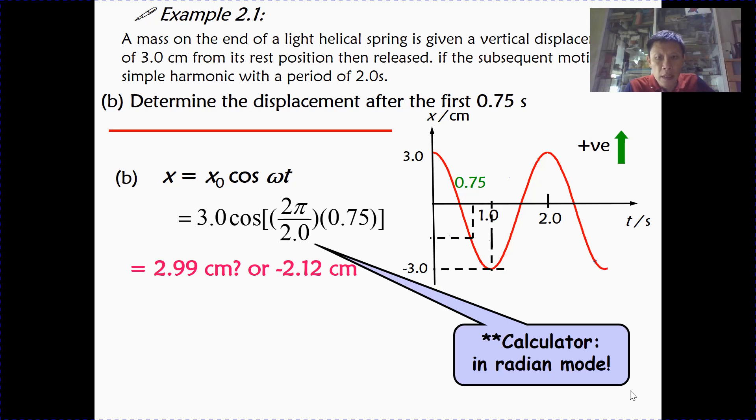Please take note here, that when you use expression 2π over T for omega, then your calculator must be in the radian mode, because 2π is in radians. If you want to leave your calculator in degree mode, then you have to put the numerator as 360 degrees. Only if you put to the correct mode in your calculator, then you can get the correct answer of 2.12 cm, which corresponds to this point here. 2.99 cm is not possible, because that will be at the amplitude position.